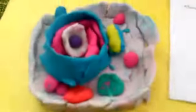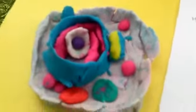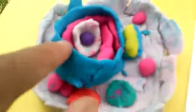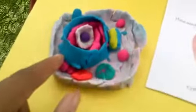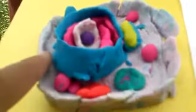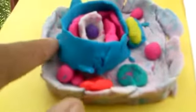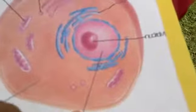The tubules and sacs are all connected and interconnect so that the ER membrane forms a continuous sheet enclosing a single internal space. Its membrane is a site of production of all the transmembrane proteins and lipids for most of the cell's organelles.